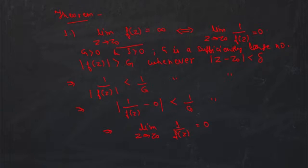These two conditions are equivalent because we can reverse the direction of the argument. If the limit as z tends to z₀ of 1/f(z) is 0, that means |1/f(z) − 0| < 1/g whenever |z − z₀| < ε, which means |f(z)| > g whenever |z − z₀| < δ — and that is exactly the definition of the limit of f(z) being infinity. So this is an if-and-only-if condition.